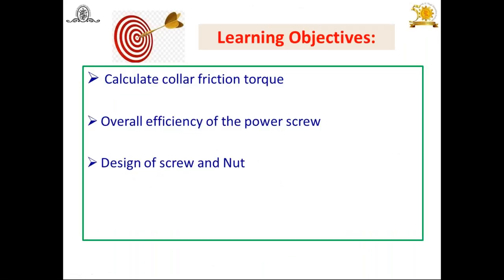The first learning objective of today's session is to calculate the collar friction torque. Yesterday we calculated the efficiency of the square threaded screw, but we only considered friction between the threaded surfaces — that is, between screw and nut. We were not taking into account the collar friction. Today we are going to determine how much torque is required to overcome this collar friction.